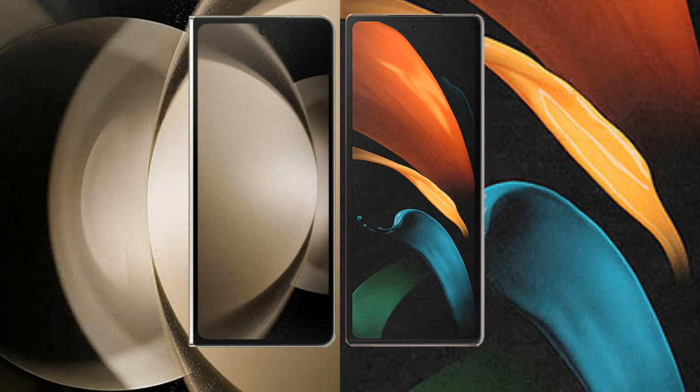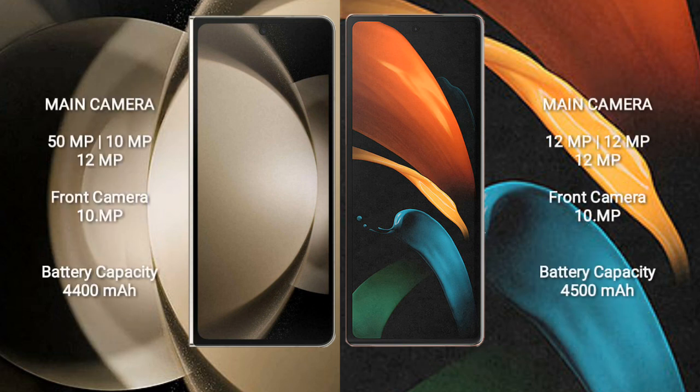The Samsung Galaxy Z Fold 5 features a triple rear camera setup of 50MP + 10MP + 12MP, plus a 12MP front camera. The Samsung Galaxy Z Fold 2 features a triple rear camera setup of 12MP + 12MP + 12MP, and a 10MP front camera.